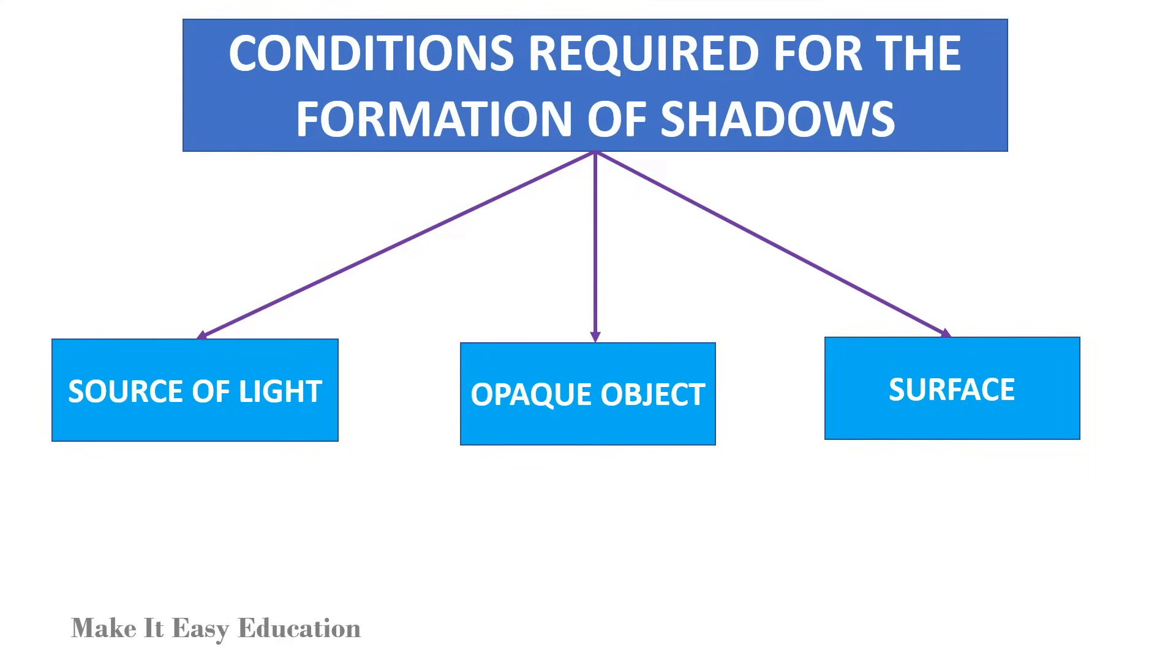Conditions required for the formation of shadows. For the formation of shadow, we need to have three things. They are: a source of light, an opaque object, a surface on which the shadow would form.